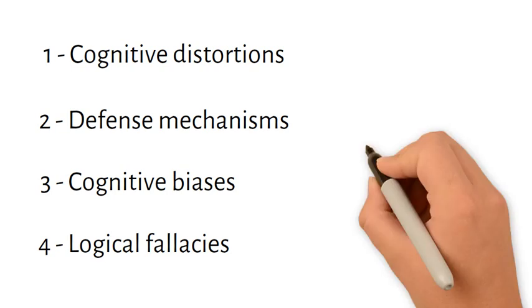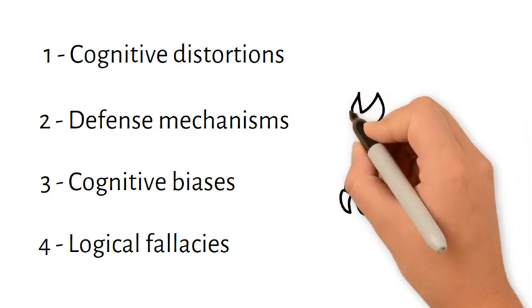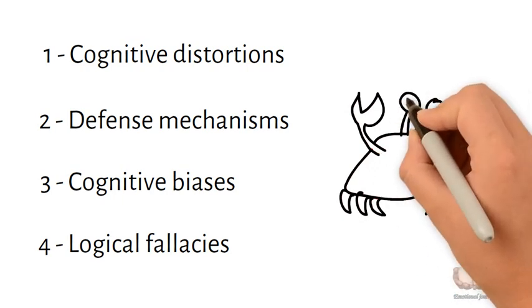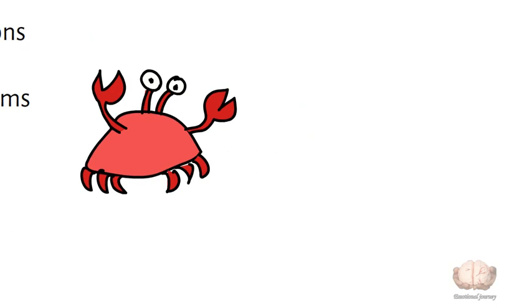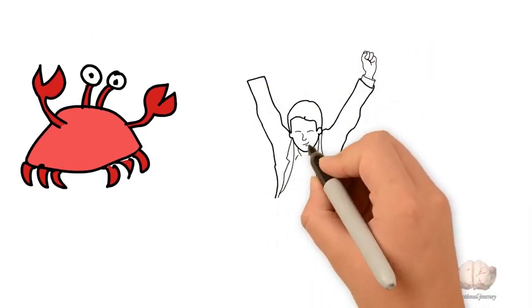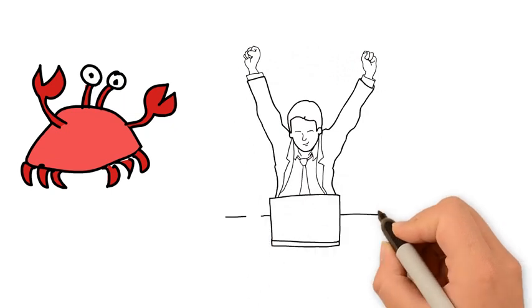Why is it important to understand these inherent bugs in our thinking? Being aware of them is the first step toward avoiding being misled or outsmarted by our own minds. We can learn to watch out for distorted thinking, irrational justifications, judgment errors, and flaws in reasoning.